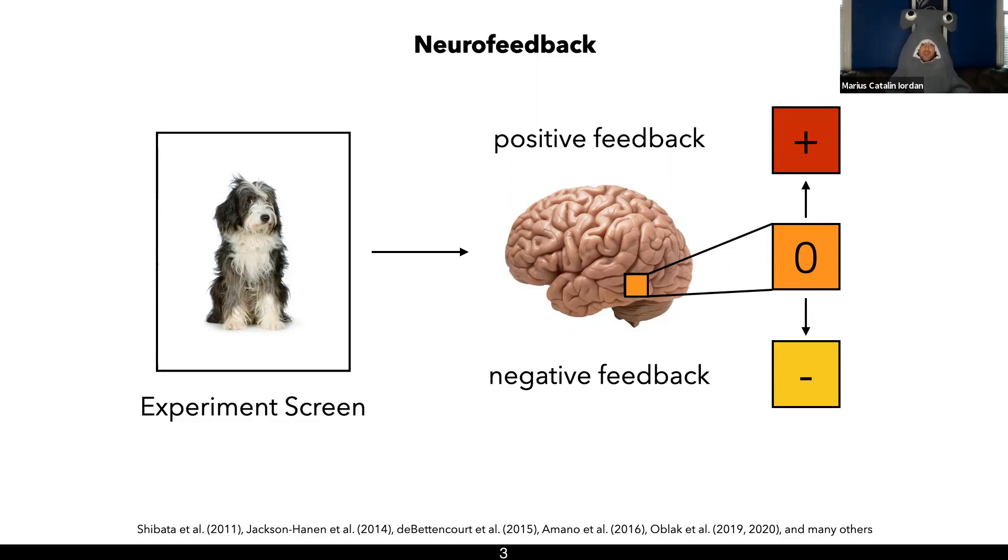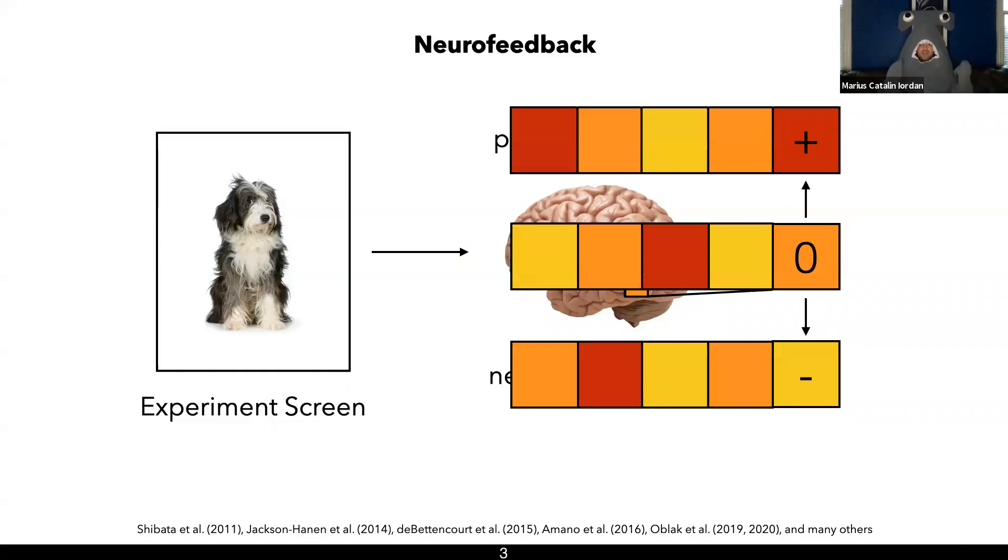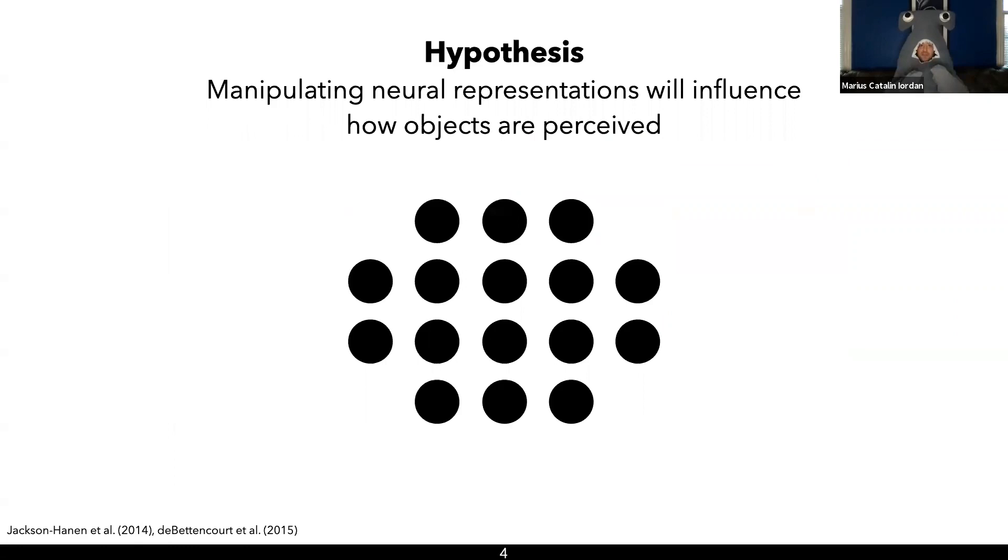Now, in practice, visual categories respond to complex multivariate patterns over thousands of voxels in the brain, not just activity level. So we're going to use a similar method, but have participants generate new patterns of activity in their brain, not just up or down regulate them.